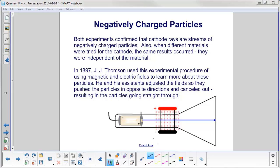Both experiments, one using a magnetic field and one using an electric field, confirmed that cathode rays are streams of negatively charged particles.